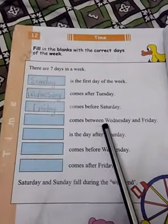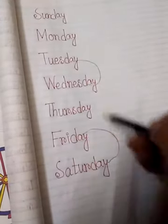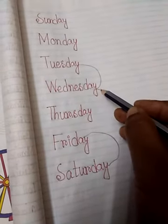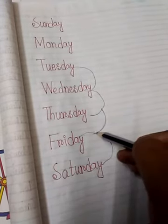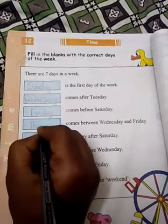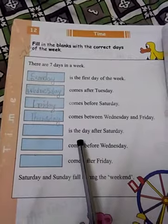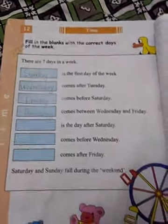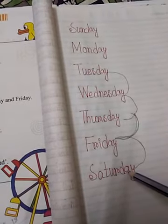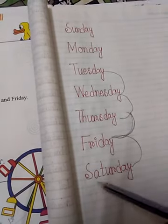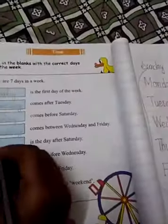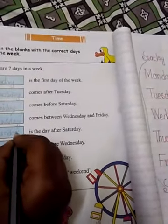Thaarpaar, dash comes between Wednesday and Friday. Wednesday r Friday r maje kia aše — Thursday. T-H-U-R-S-D-A-Y. Thursday. The next one — that is the day after Saturday. Saturday r pore kia aše? Saturday r pore, again from the start — Sunday. S-U-N-D-A-Y. Sunday.